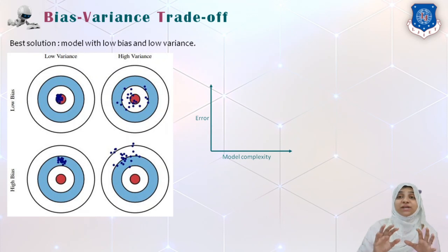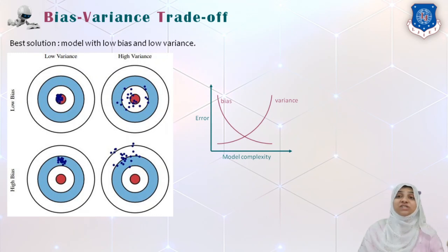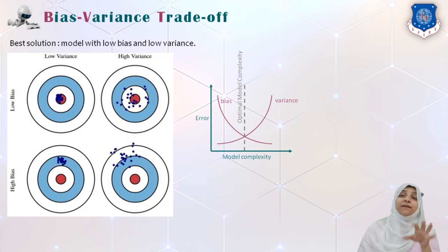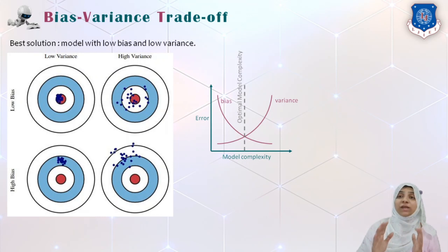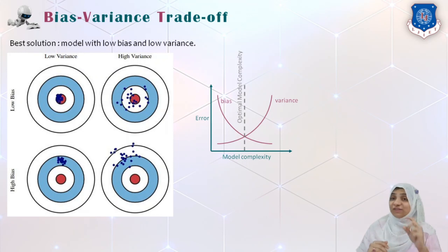If we plot bias and variance on a two-dimensional plot of error versus model complexity, as variance increases, bias decreases, and vice versa. We must find an optimal model complexity where both bias and variance are as low as possible. If the model is too complex, we get low bias but high variance. If the model is too simple, we get high bias but low variance. We need to choose a complexity in between such that both bias and variance are minimized.